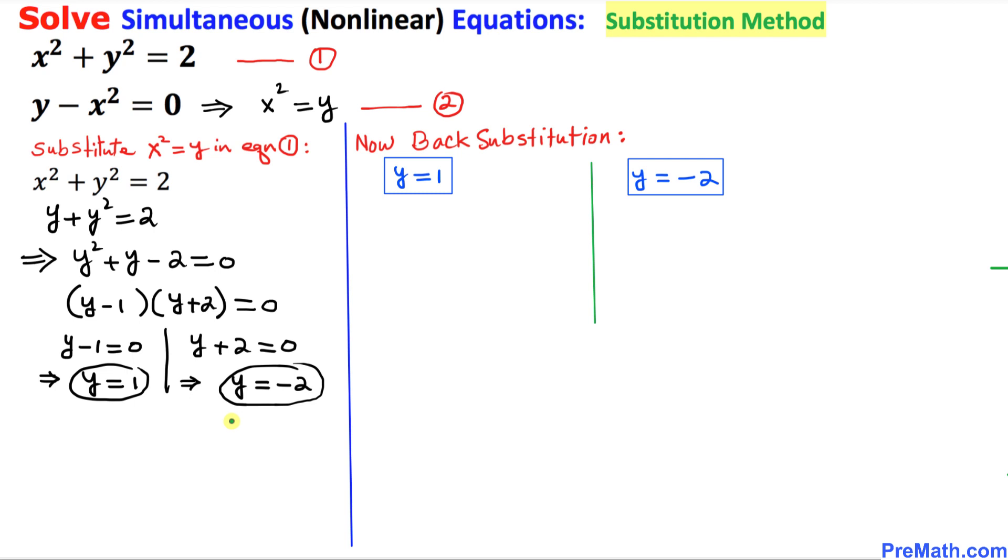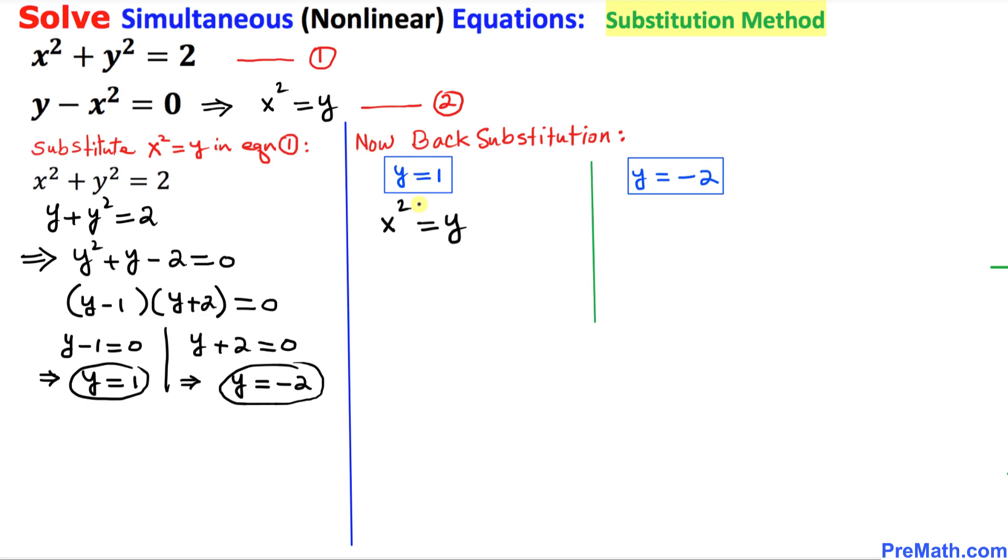And since we are running out of space on the left hand side I wrote down y equals to 1 and y equals to negative 2 on the right hand side and we are going to do back substitution. So where we are going to see x squared equal to y we are going to substitute these y values. For this first value y equals to 1 this x squared is going to be equal to we are going to replace y by 1.